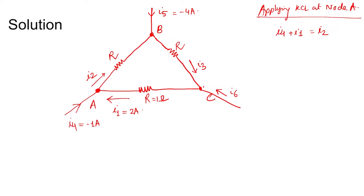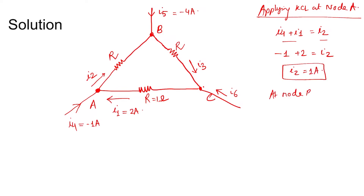Since all what is entering must equal what is leaving, we get: i4 = -1, i1 = 2, therefore i2 = i4 + i1 = -1 + 2 = 1 ampere.